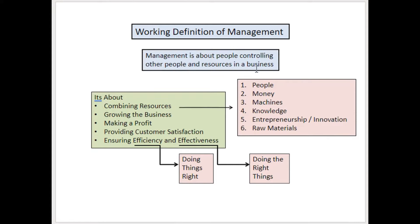We can ask ourselves: what are the resources being managed in a company by a manager? Firstly, people — and that can be a specialized function, in which case we call it Human Resource Management. Then it's also money, and that can also be a specialized function, in which case we call it Financial Management.